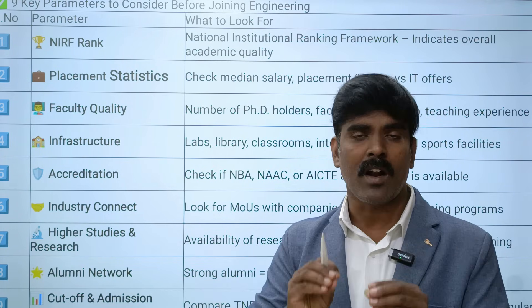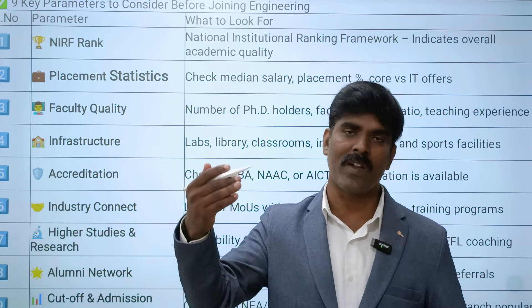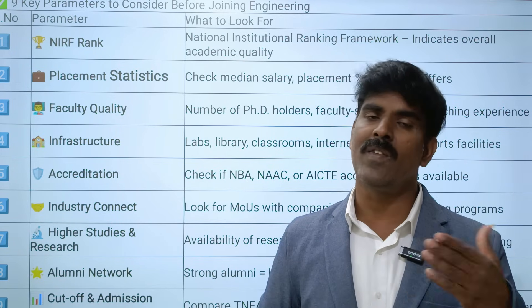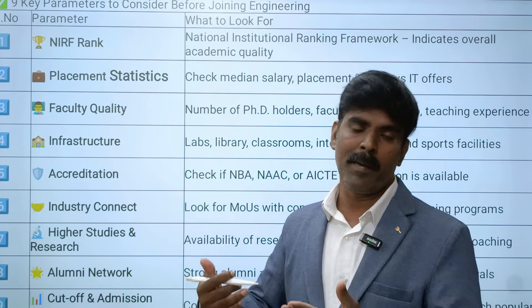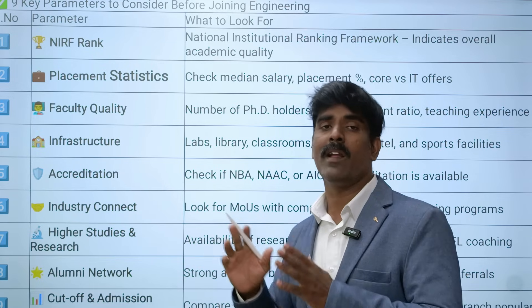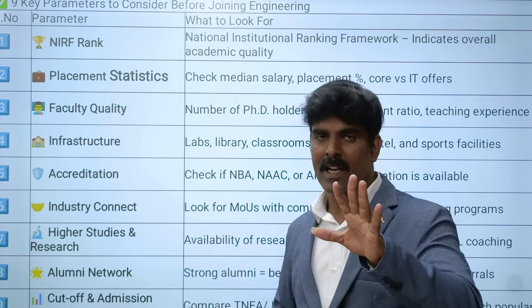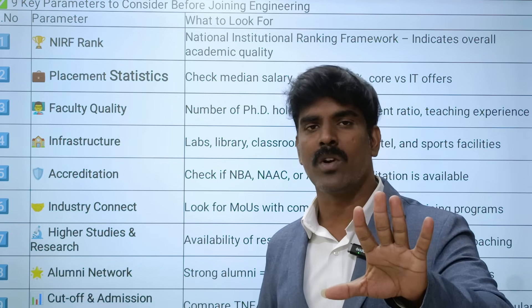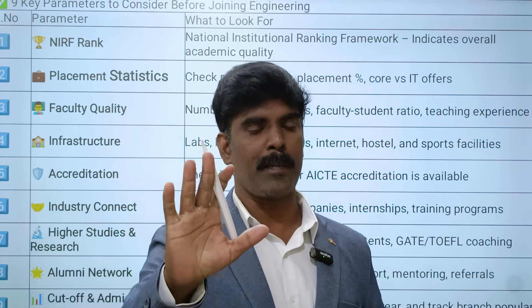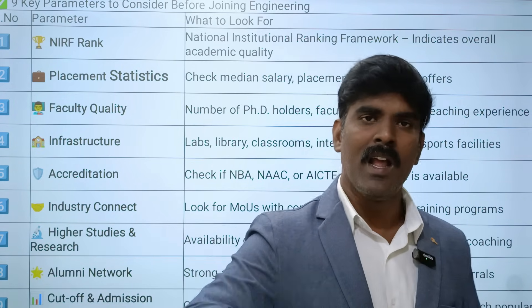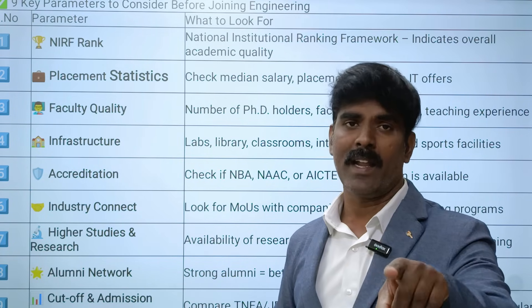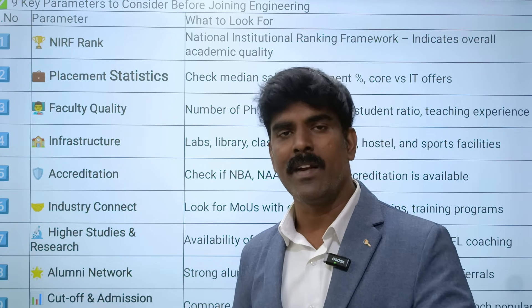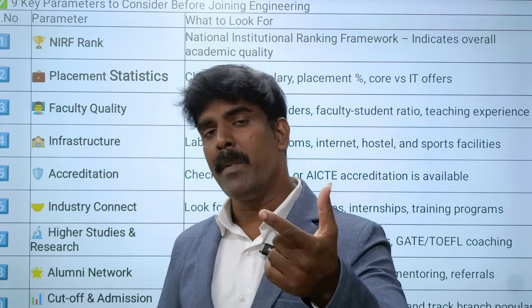The eighth parameter is the alumni network. Check what alumni from that college are doing - for example, alumni working at Meta, Google, Facebook, Amazon, and other companies who are driving those companies. You can check the alumni network through LinkedIn profiles to understand the college's placement strength.